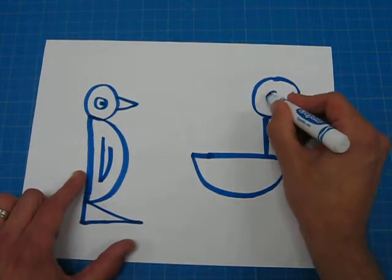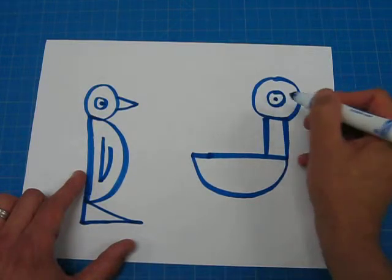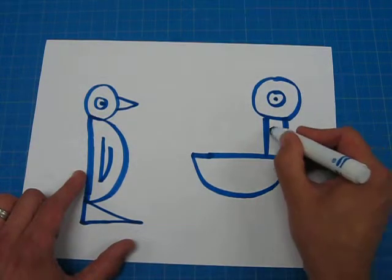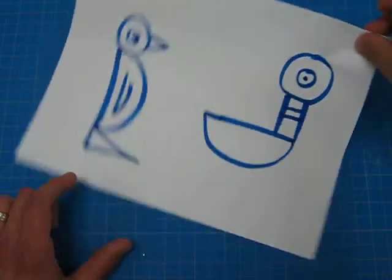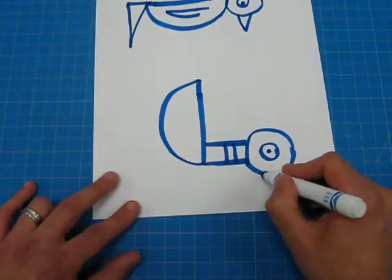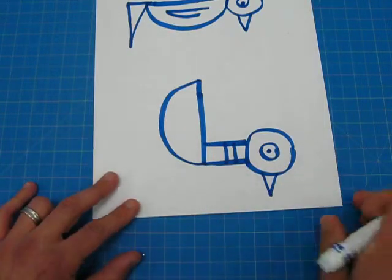A letter O for his eye. And we can put a pupil on there. I'm going to make two lines for the little stripe on his neck. I'm going to turn that paper again. Make a letter V. And that's his beak.